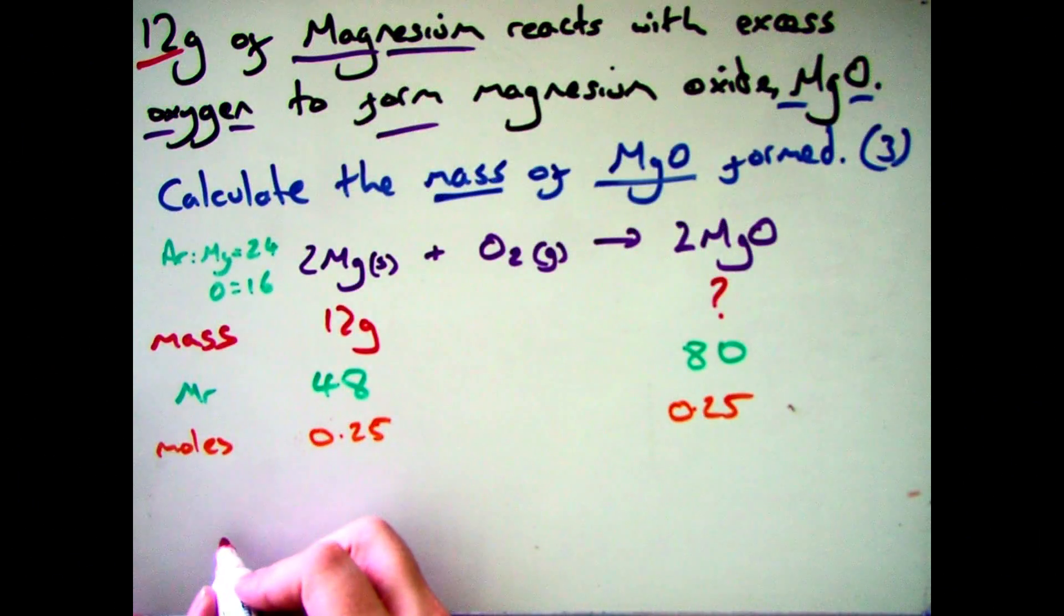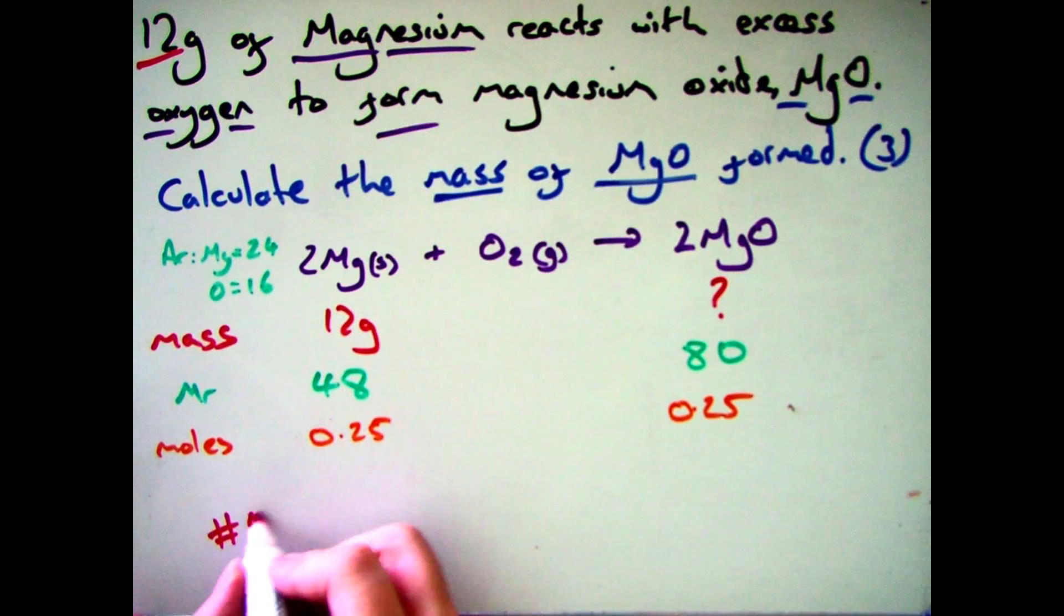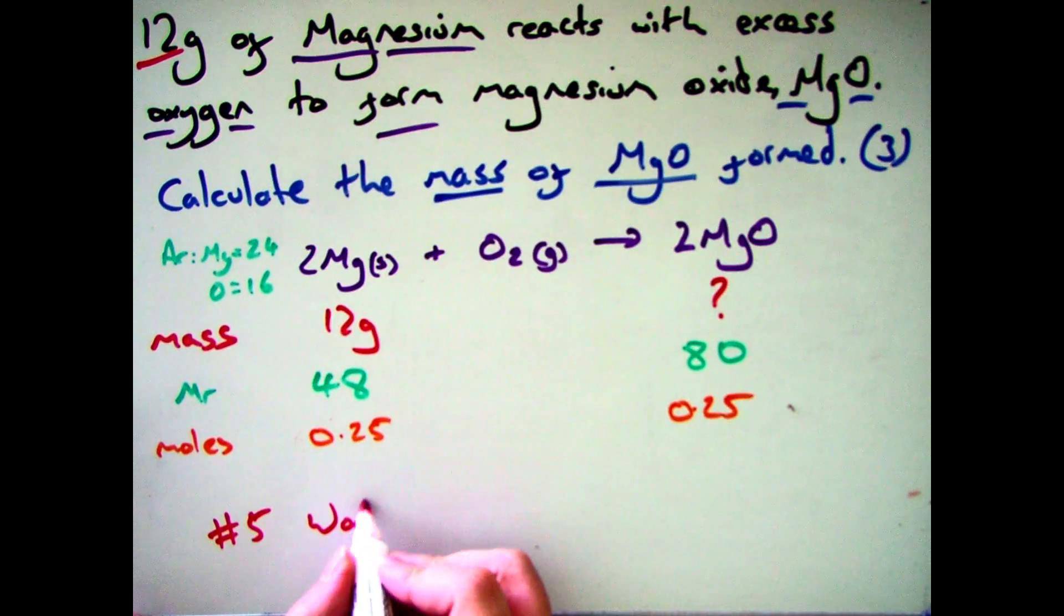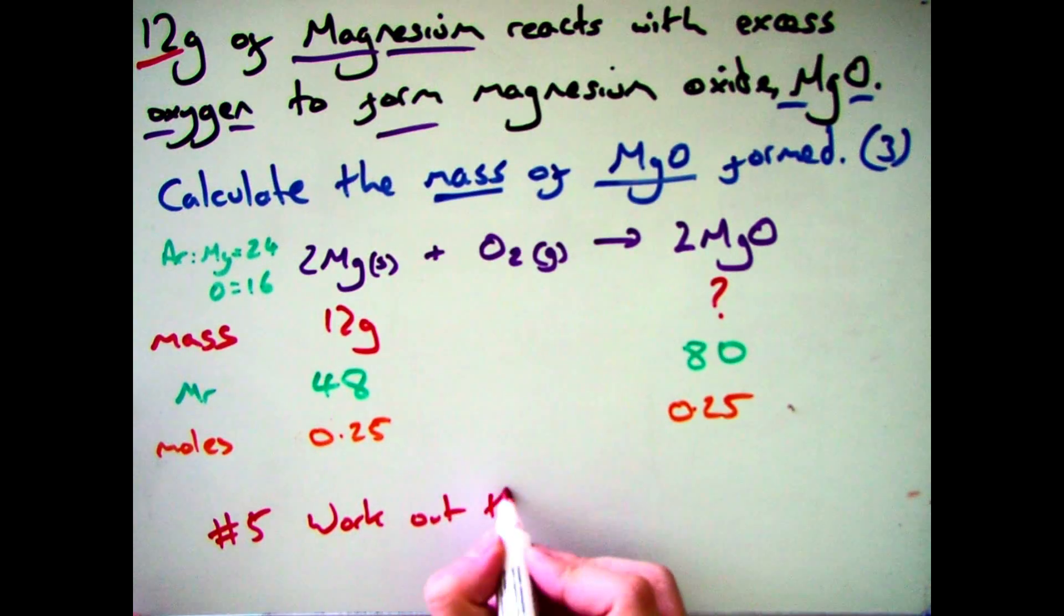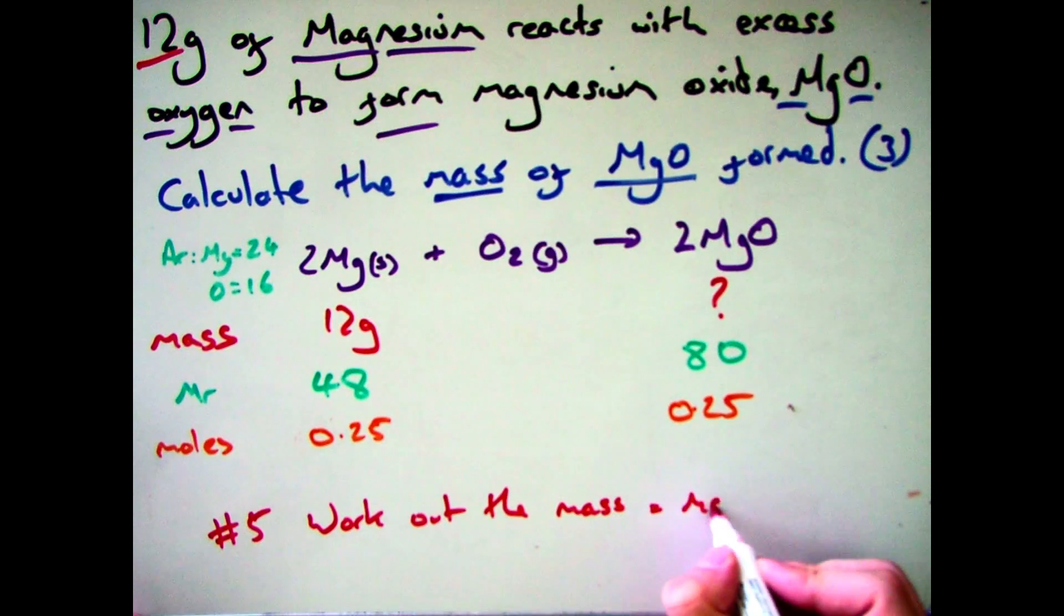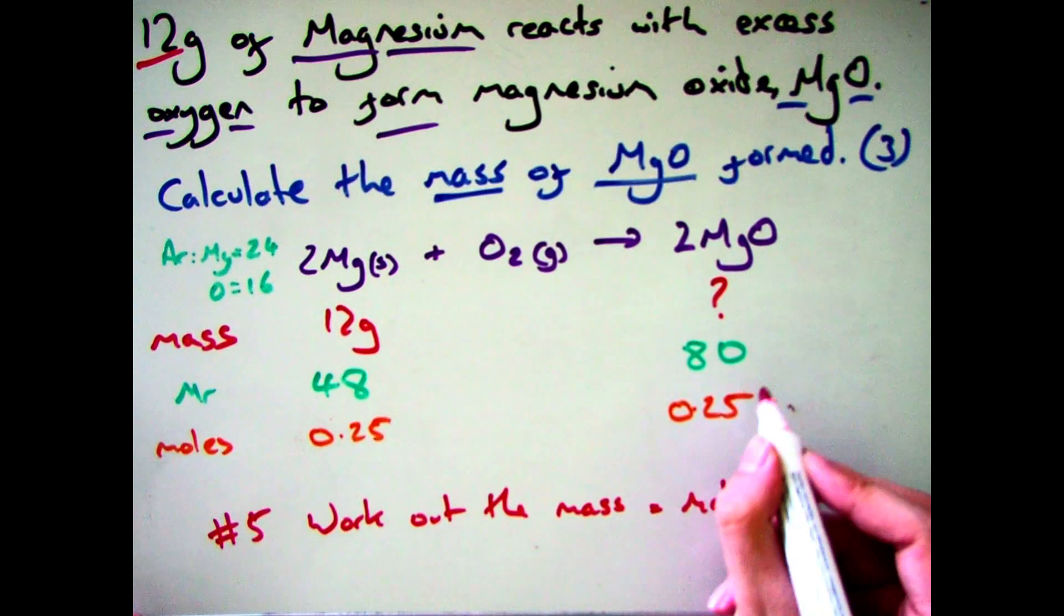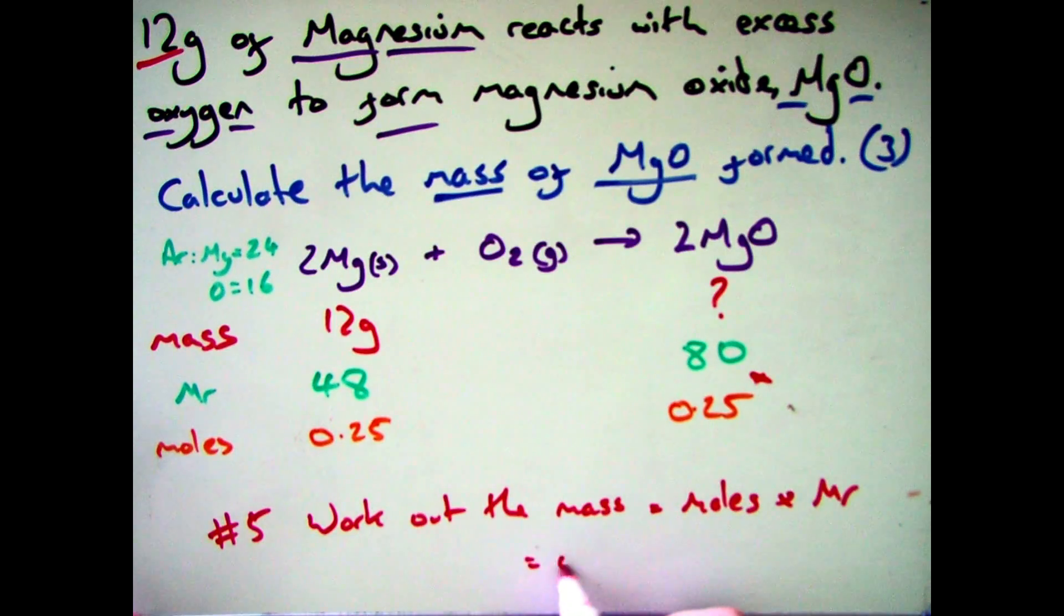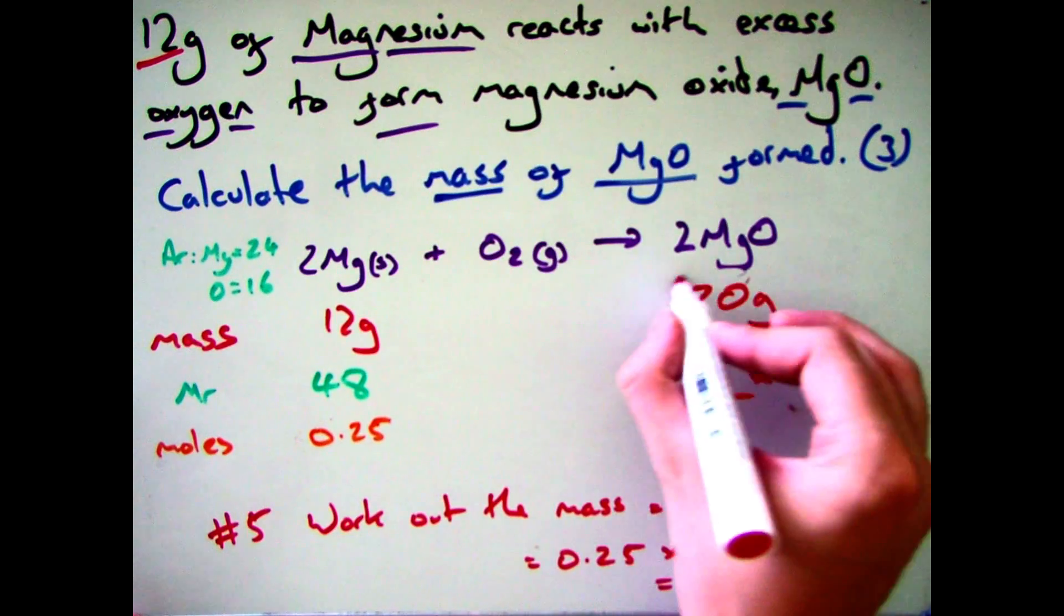Your final step then is to work out the mass of magnesium oxide. So you rearrange your equation. If moles is mass divided by MR, mass is moles times by MR. So I need to take my 80 for my MR and multiply it by my 0.25 moles. So 80 times by 0.25 gives me 20 grams. And that is your final answer.